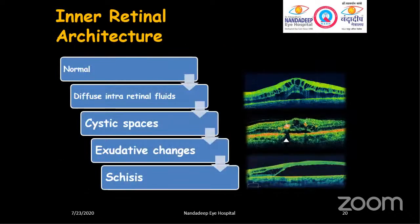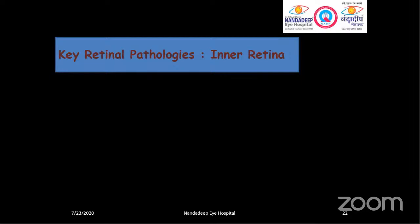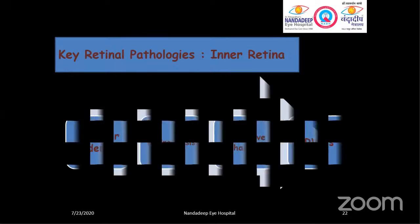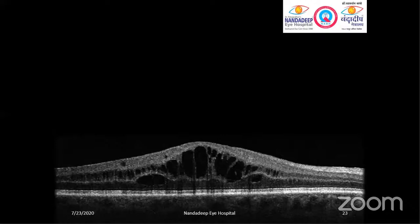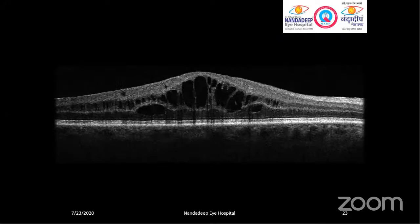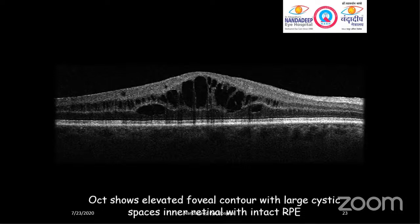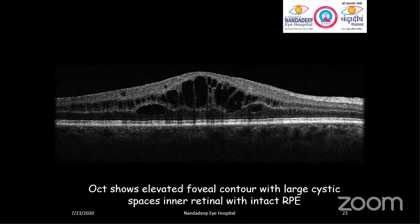Let's come to the inner retina architecture. It may be normal, have diffuse intraretinal fluids, cystic spaces, exudative changes, or retinoschisis (separation). Key retinal pathologies detected in the inner retinal part through OCT include macular edema, retinoschisis, exudative changes, and retinal vein occlusions secondary to macular edema. In this very common picture, applying all four points: there is elevation of foveal contour with multiple large cystic spaces in the inner retinal area, and the outer retina is intact. OCT shows elevated foveal contour with large cystic spaces in the inner retinal layer with intact RPE. This is a typical clinical case of cystoid macular edema.